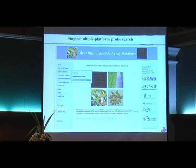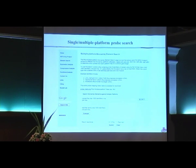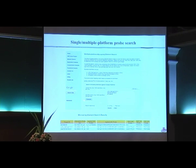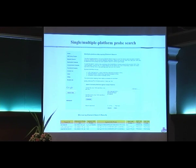The first tool is a single or multiple platform probe search. You can go to the element search, click the option, and create a multiple search. You can query with three types of gene IDs and submit. For example, using a sample ID, you can get information including Affymetrix 22K, Agilent 4K, BGI array, and NSF array. You can then use this probe information to get data from other array platforms.